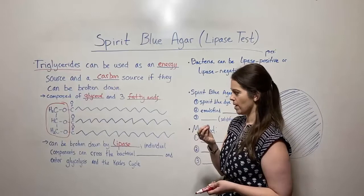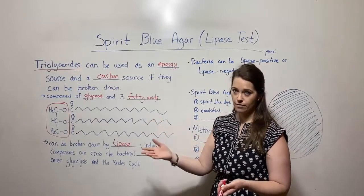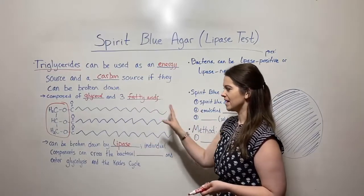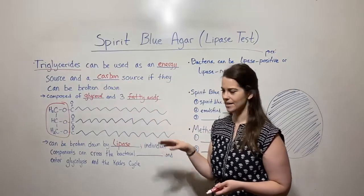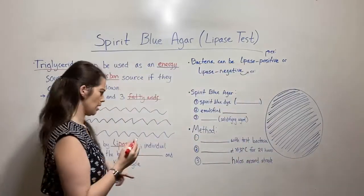From the point of view of the bacteria, they can secrete this lipase enzyme, if they have the gene for it, to break down triglycerides. And then the individual components, like the glycerol and the fatty acids, can actually then cross the bacterial cell wall.